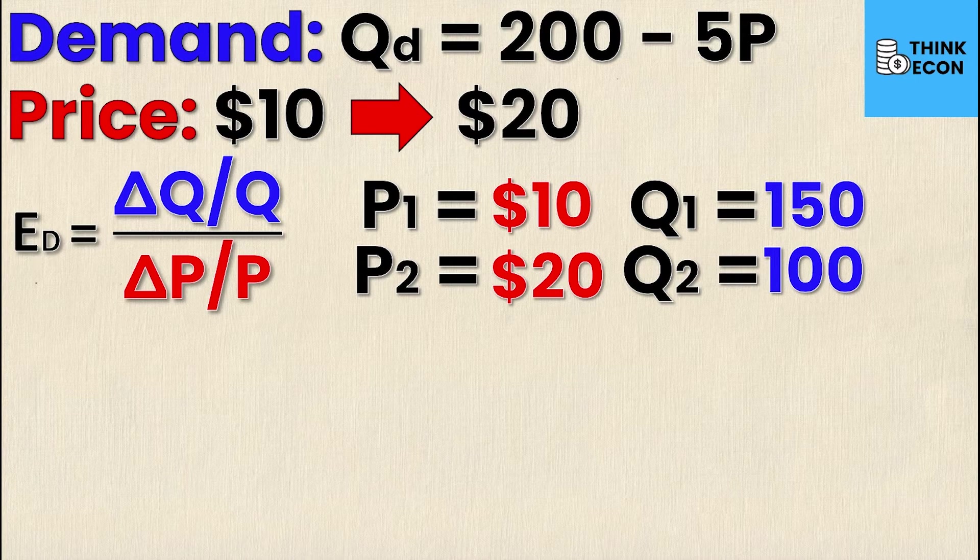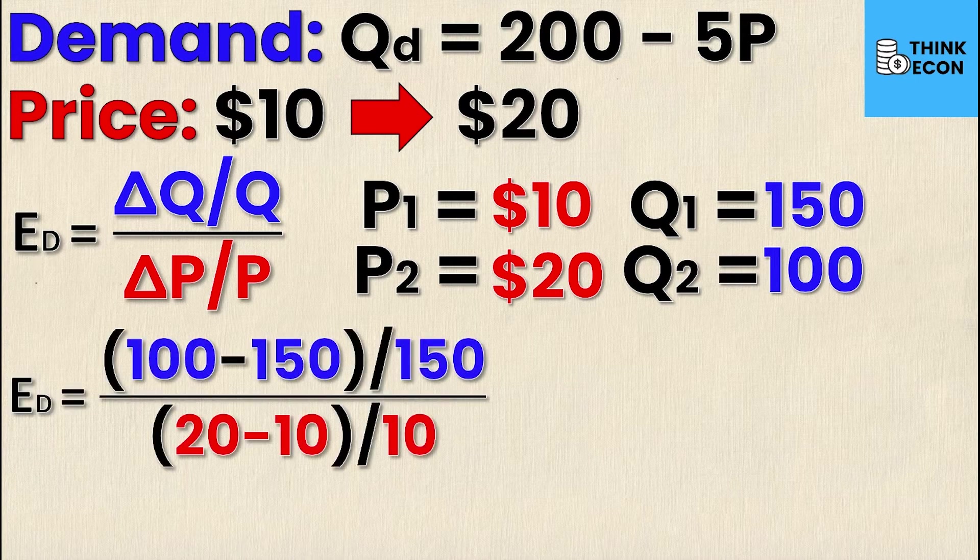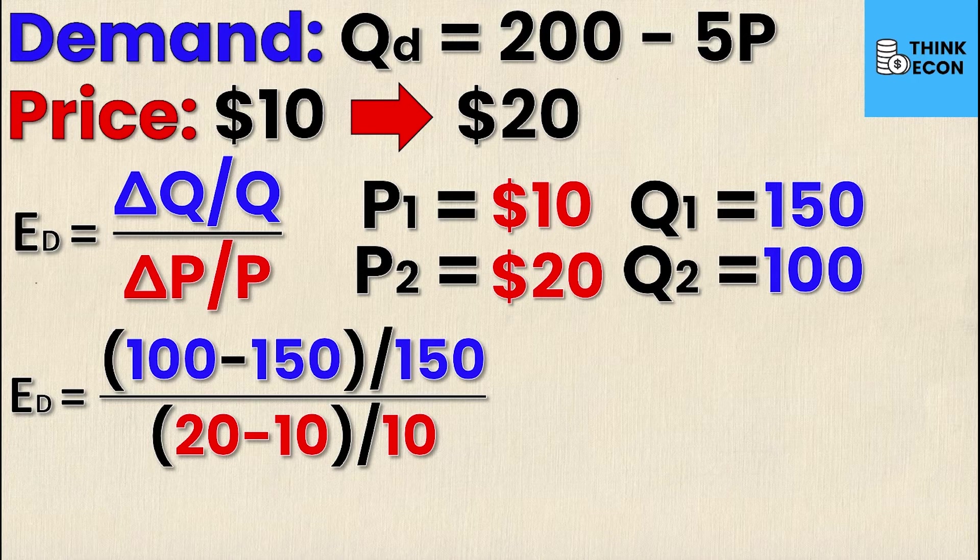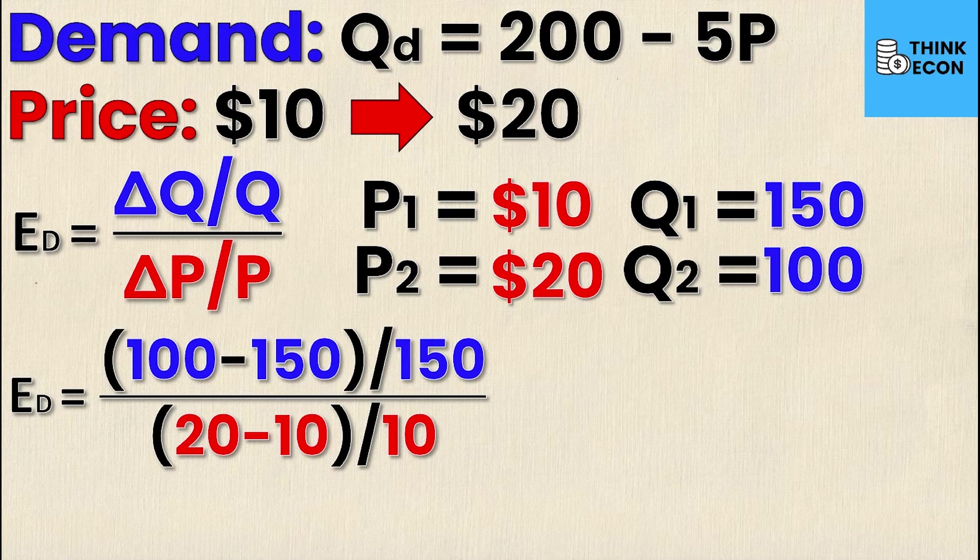Let me illustrate what that looks like with the numbers we have in front of us. So elasticity of demand equals the new quantity, which is 100, minus the old Q, which is 150, divided by the old Q, which is 150. I do the same thing for price: new price minus old price over old price. So 20 is the new price minus 10 divided by 10. That's the easiest way for you to remember percentage change.